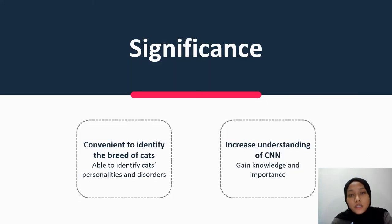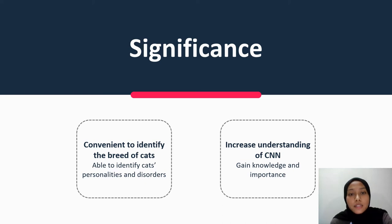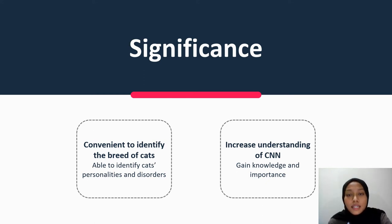This project consists of two significances. Firstly, the system is convenient to help users identify the breed of cats. Accurate classification and recognition of cat breed can help cat lovers to identify their personalities and inherited disorders of the cat. Next, this project can increase understanding of CNN. Better understanding of CNN will assist in gaining knowledge for users, and the technique can also be used in future development and research.